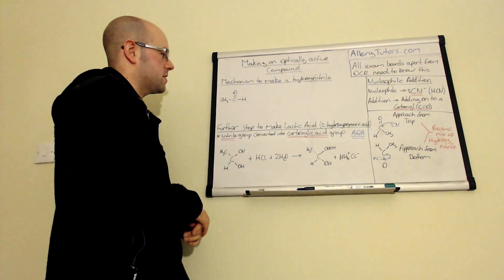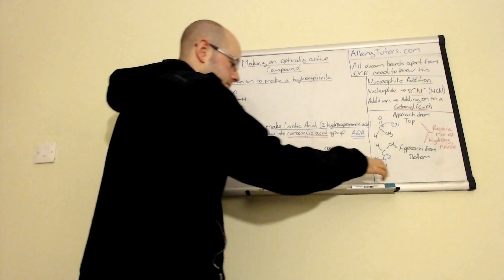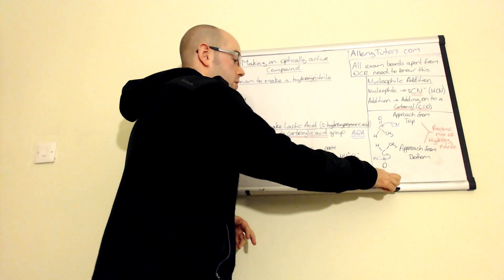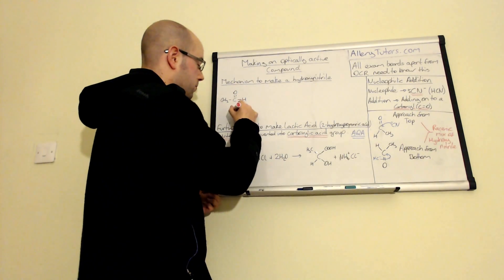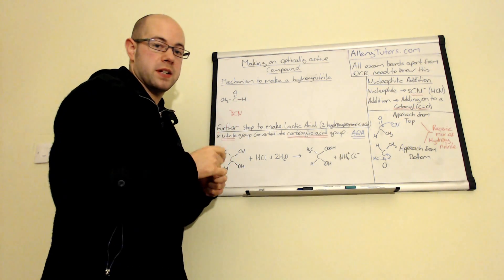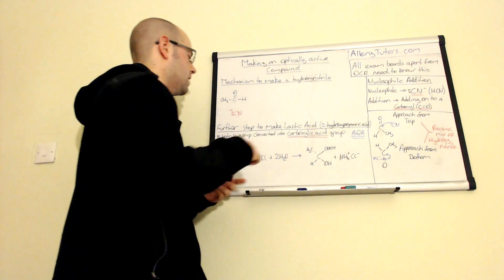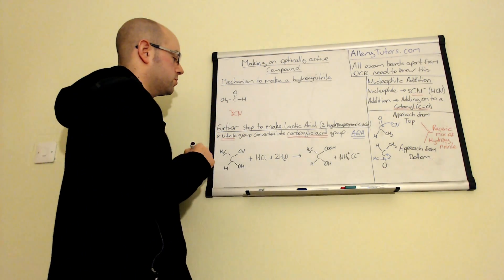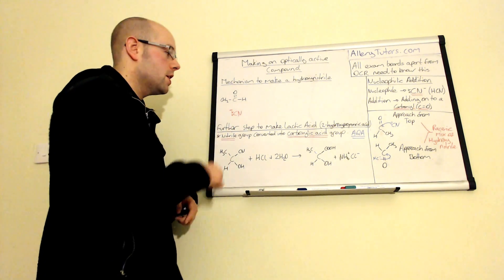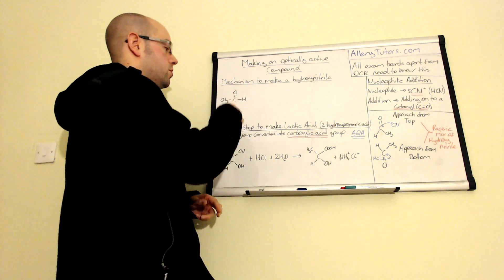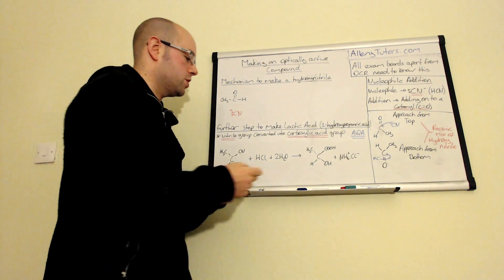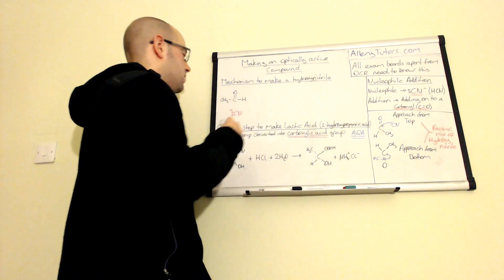Right so we're going to start with this here first. So we've got our aldehyde which is here, this is ethanal. Now if we take our ethanal and we're going to react cyanide with it. Now this was formed from hydrogen cyanide but we've taken the hydrogen bits off so we're just going to draw this cyanide instead so CN minus. Now when you're drawing a mechanism it is important to show where your lone pair of electrons are. So in this case our lone pair of electrons is sitting on the carbon which also has a negative charge and all nucleophiles must have a lone pair of electrons.